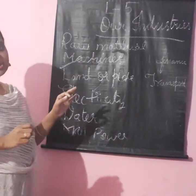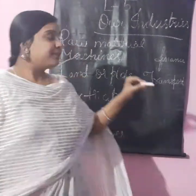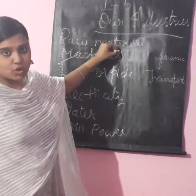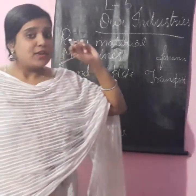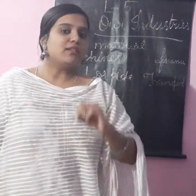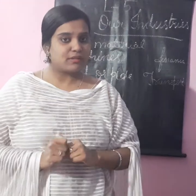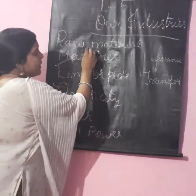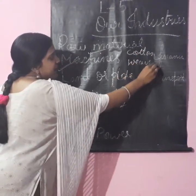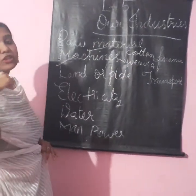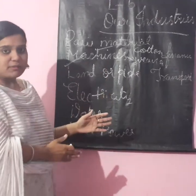Then we need machines. That cotton — you take it from the cotton plant. Raw material is cotton. You need a machine for this cotton to be processed. The machine is a weaving machine. We need to set up a weaving machine, and that comes under industries. To convert cotton into cotton cloth, we need a weaving machine, so the machine is set up there.